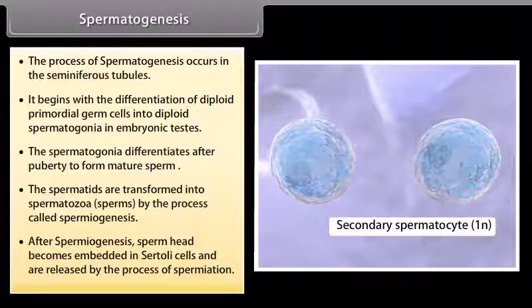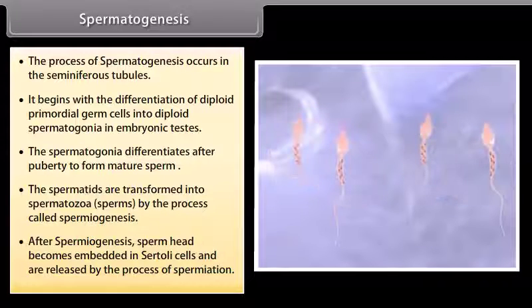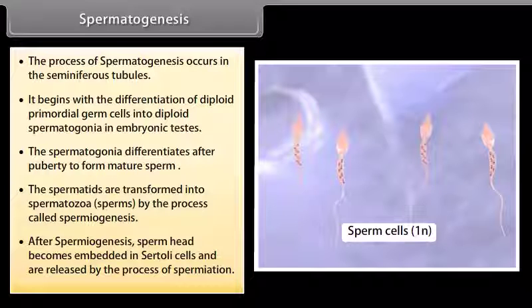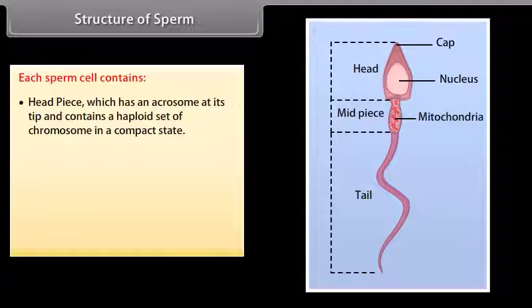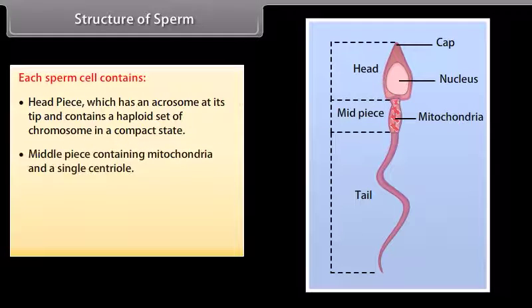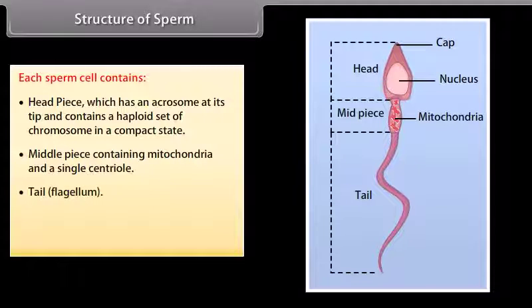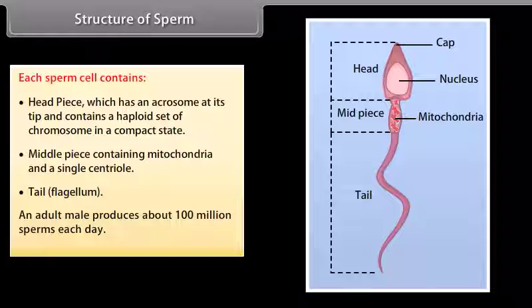After spermatogenesis, sperm heads become embedded in sertoli cells and are released by the process of spermiation. An adult male produces about 100 million sperms each day.